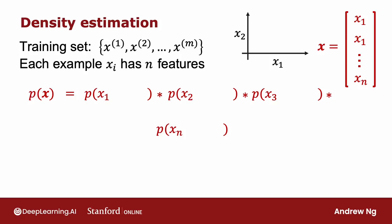If you've taken an advanced class in probability and statistics before, you may recognize that this equation corresponds to assuming that the features x₁, x₂, and so on up to xₘ are statistically independent. But it turns out this algorithm often works fine even though the features are not actually statistically independent. But if you don't understand what I just said, don't worry about it. Understanding statistical independence is not needed to fully complete this class and also be able to very effectively use the anomaly detection algorithm.